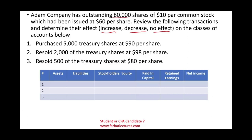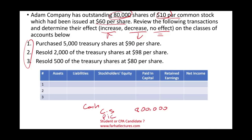Atom Company has outstanding 80,000 shares of $10 par value stock, which has been issued at $60. When we issue stocks, we debit cash for the amount received. We credit common stock for the number of shares times the par value — in our situation, $800,000 — and anything left is placed in paid-in capital. Since those stocks were sold at $60, we received $4.8 million, making paid-in capital a plug of $4 million.